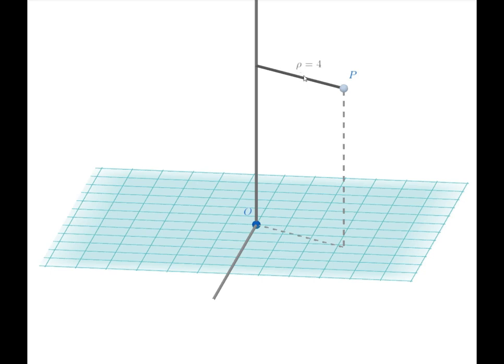I use the letter rho. Some authors use the letter R. I don't like to do that because R is normally reserved for the position vector. Rho is the distance from point P back to the polar axis on this segment that's at right angles.